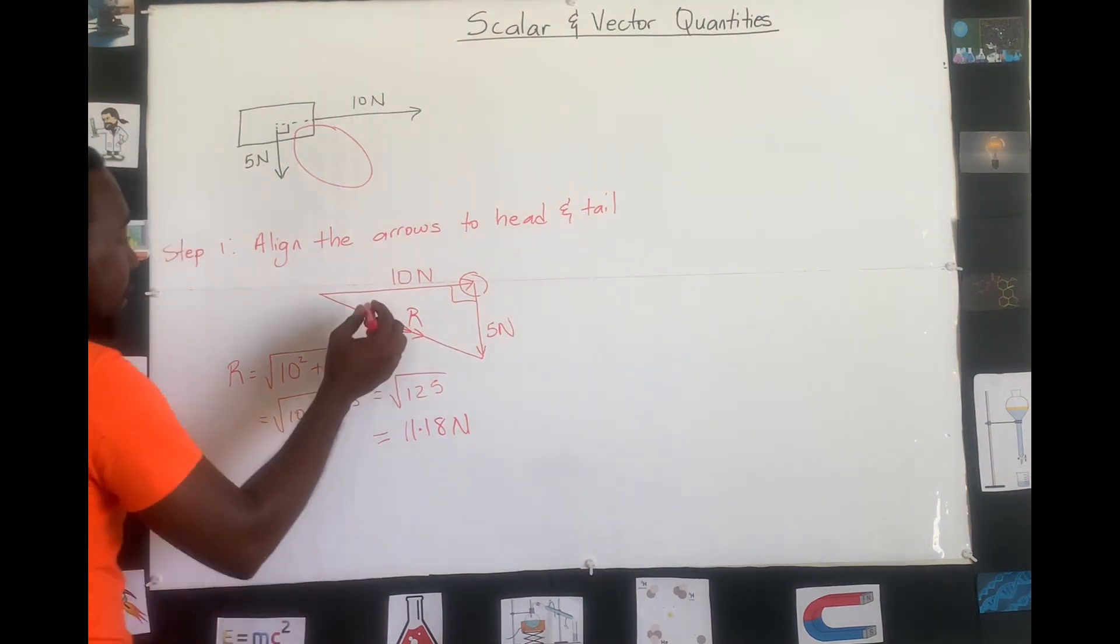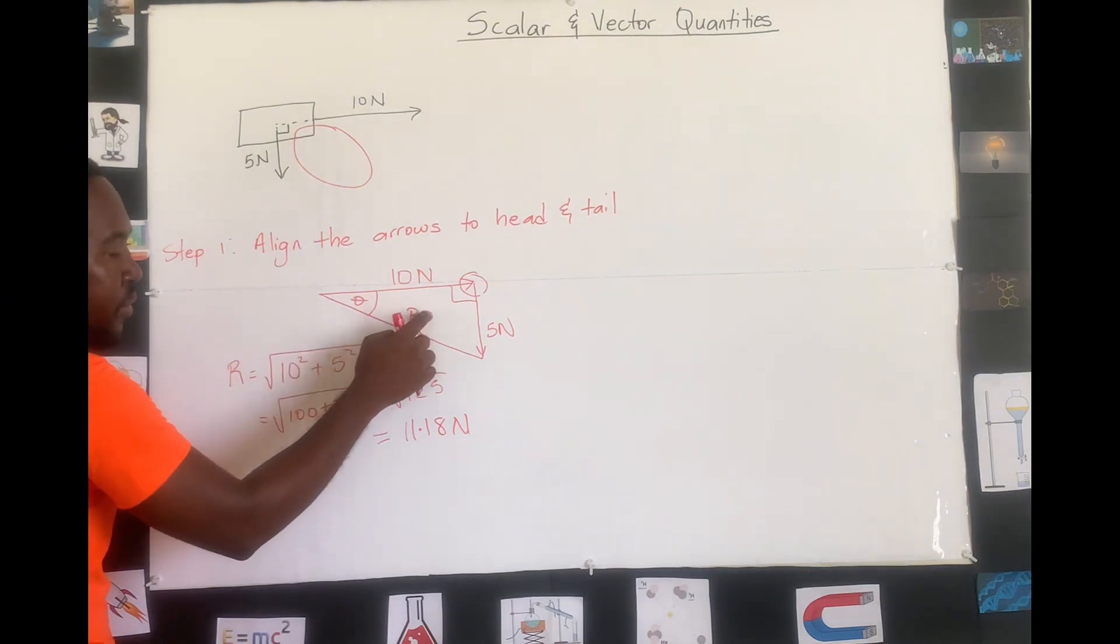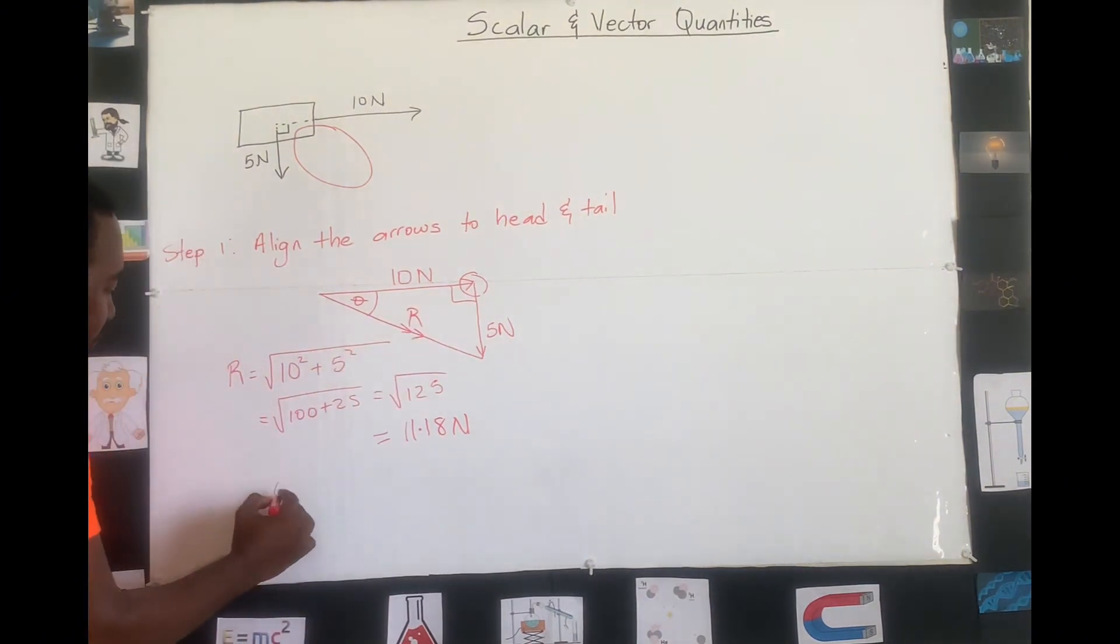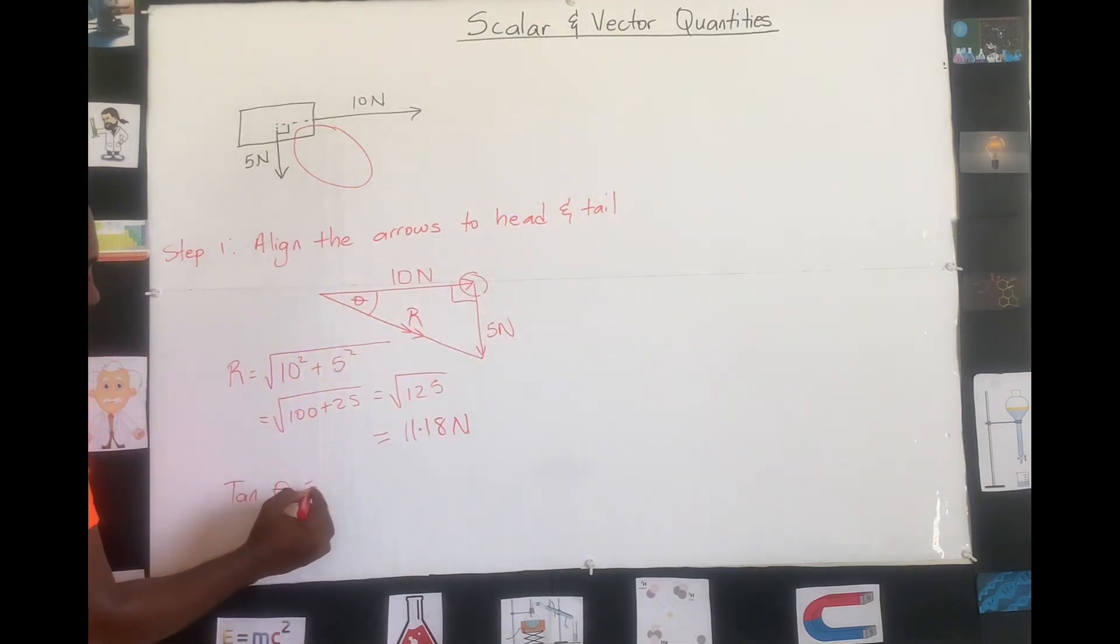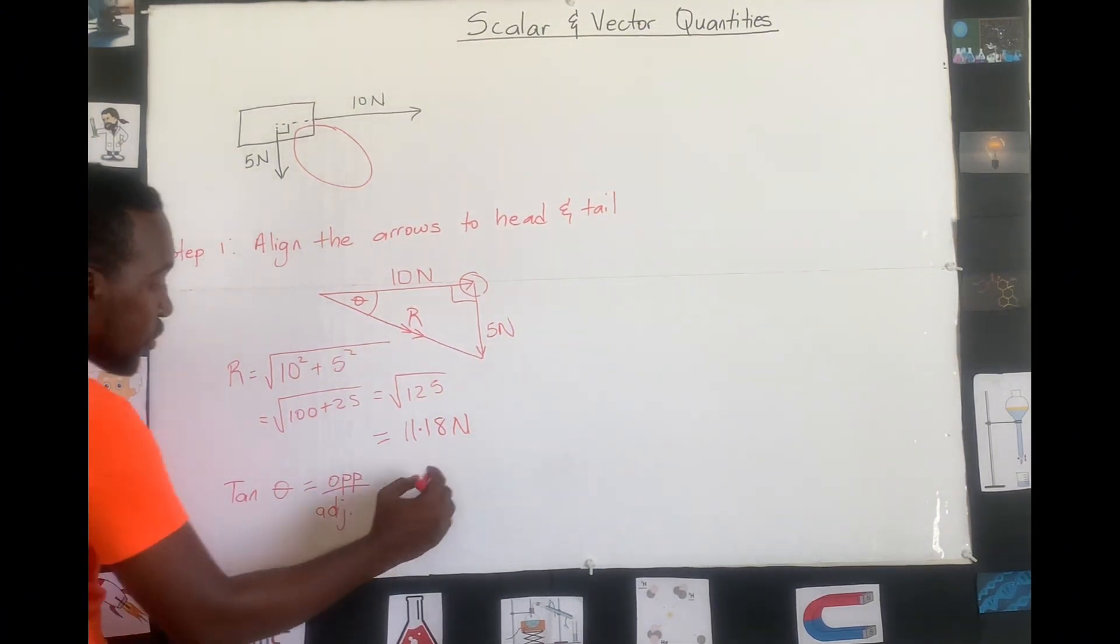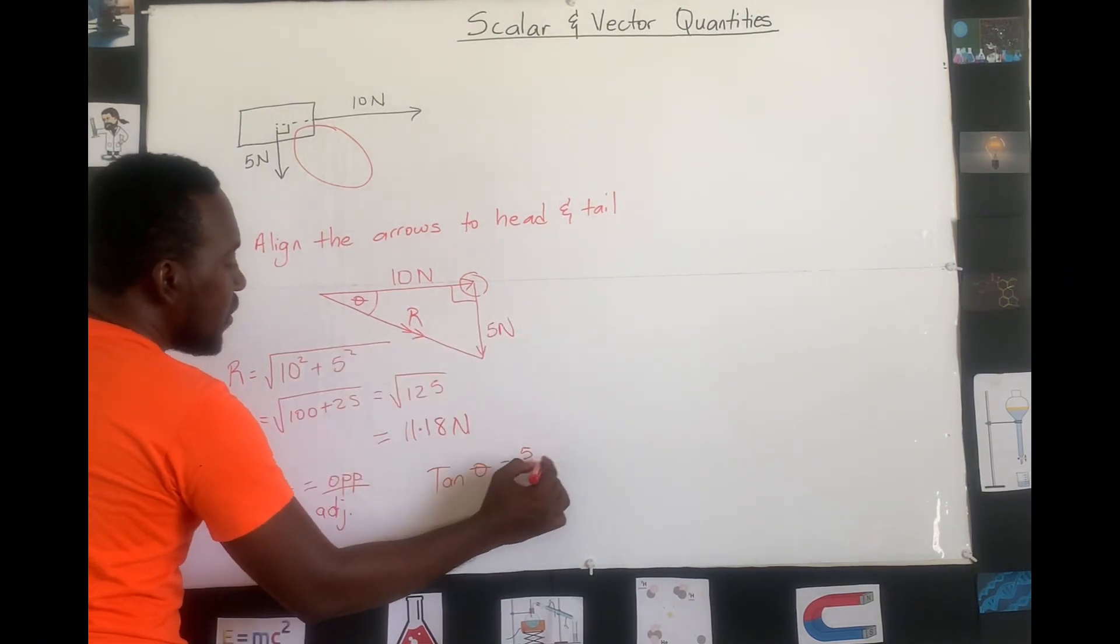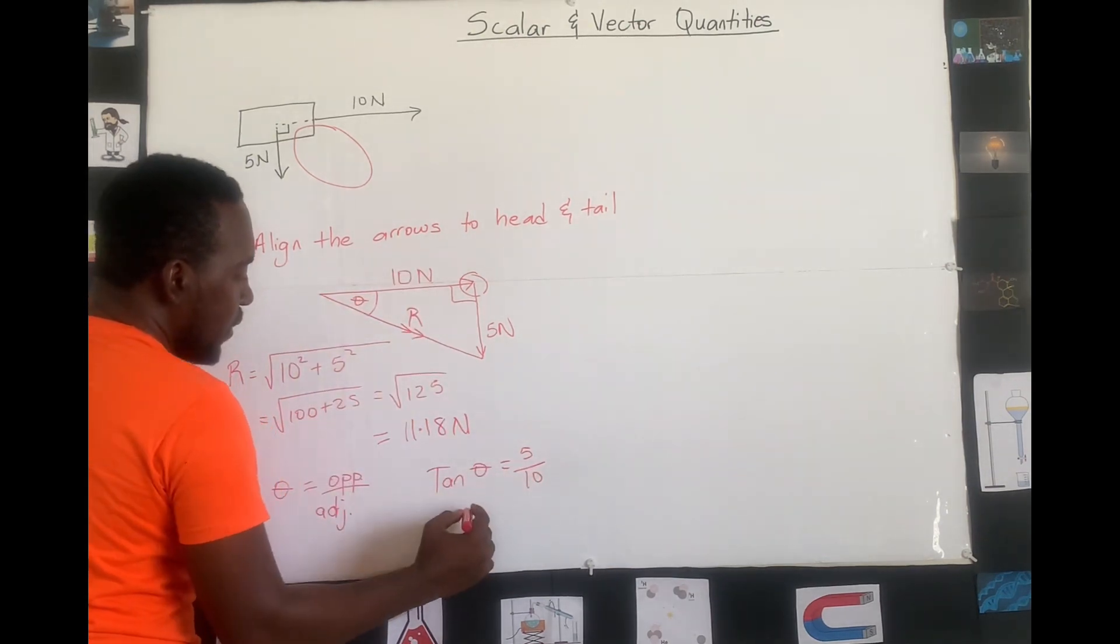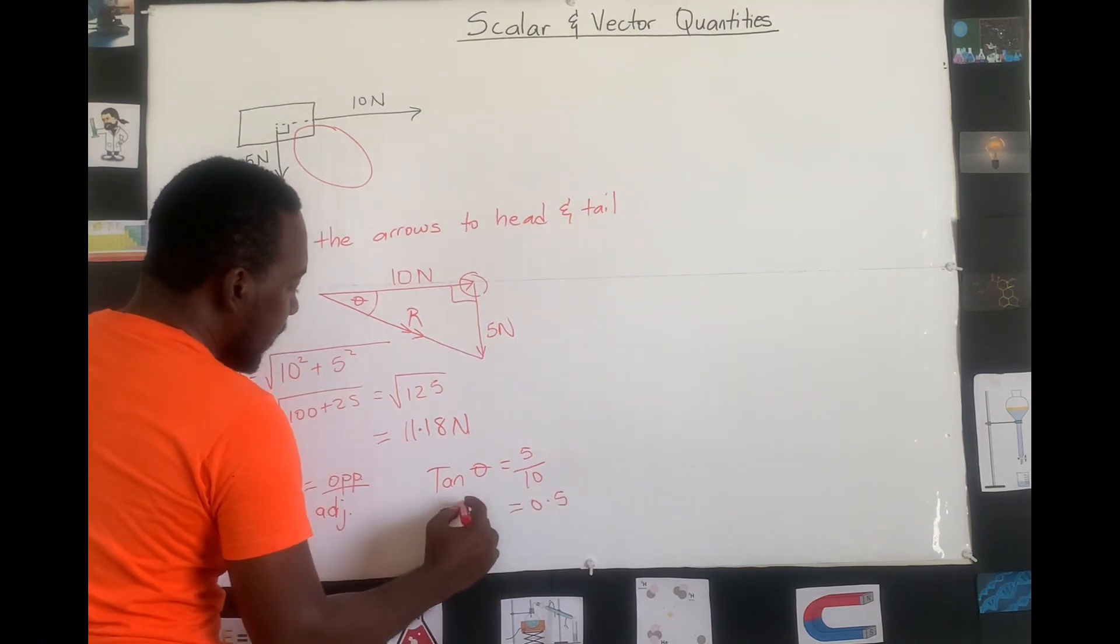We need the direction. The direction is, what is this angle right here that is at the tail of your resultant? To find that angle, we can use tan, we can use any one, tan sign, because we have all three sides. Tan theta is the opposite side over the adjacent side. Tan theta is equal to the opposite side, which is 5, over the adjacent side, which is 10, which is 5 over 10 is 0.5. And that's tan theta.